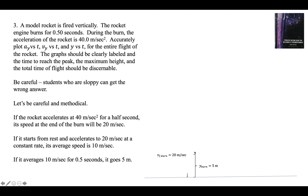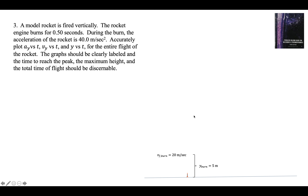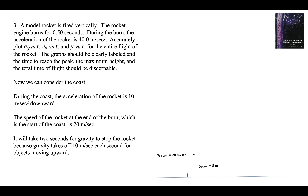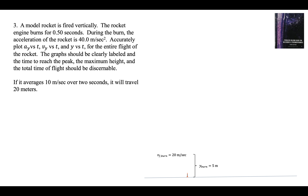Now we focus on the coast. The rocket is flying upward but slowing down under the influence of gravity. During the coast, the acceleration is 10 meters per second squared downward. The speed at the beginning of the coast is 20 meters per second. It will take gravity 2 seconds to reduce that speed to zero, since gravity removes 10 meters per second each second. The rocket goes from 20 meters per second to a stop, averaging 10 meters per second over 2 seconds, so it travels 20 meters upward. The burn was 5 meters, the coast is 20 meters.